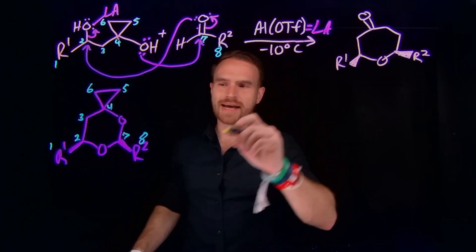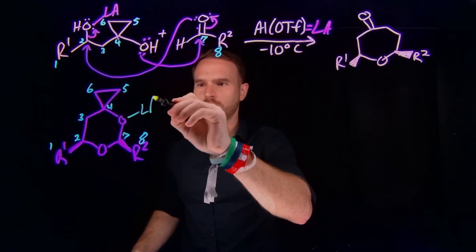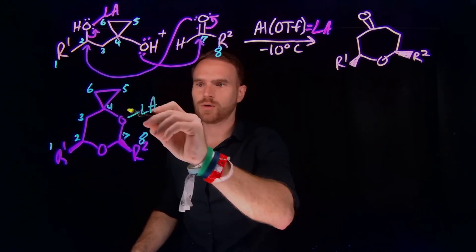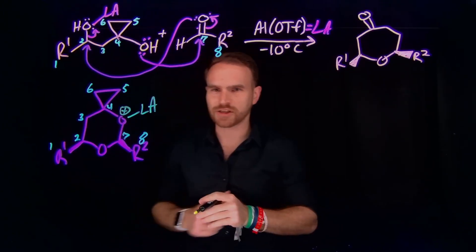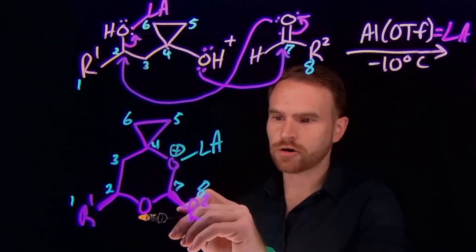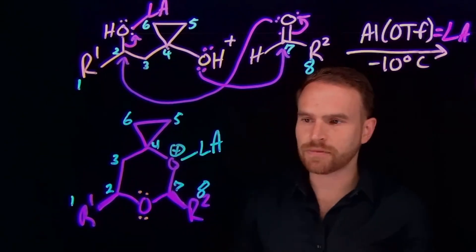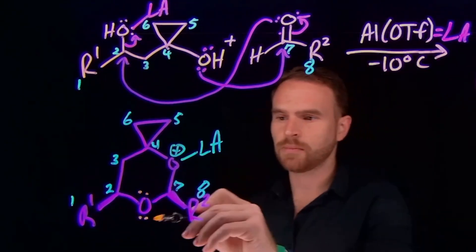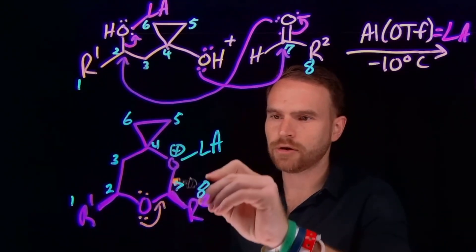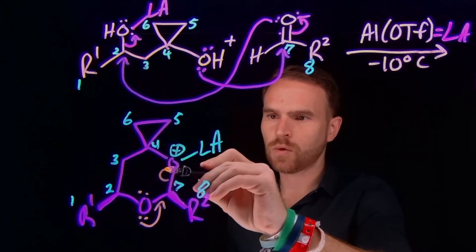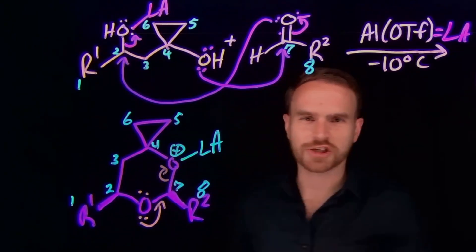And from here the Lewis acid that we're using can actually come and coordinate at this oxygen position again as well which is going to make this basically positively charged and since this was positively charged that's actually going to help us flow some of these electrons through this system where these electrons will come down here and that's actually going to open this ring where these electrons will come over to this oxygen to end up making it neutral.